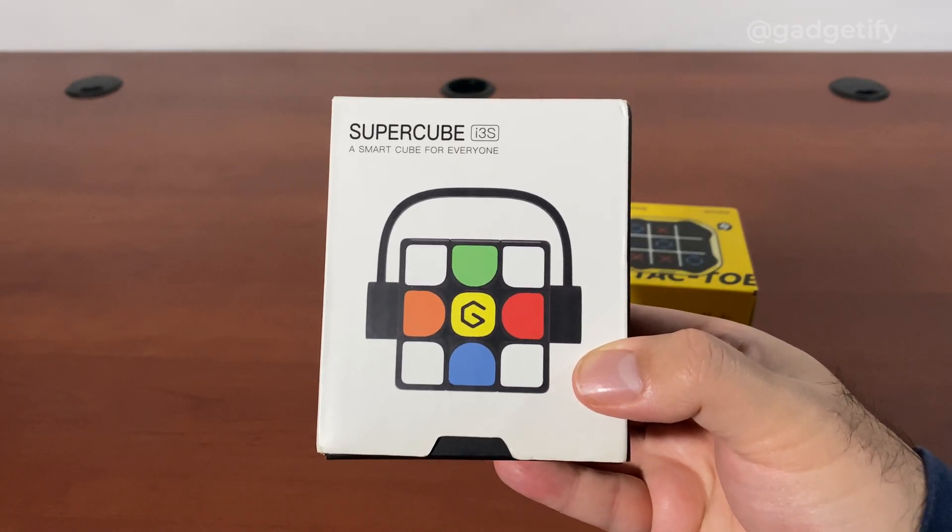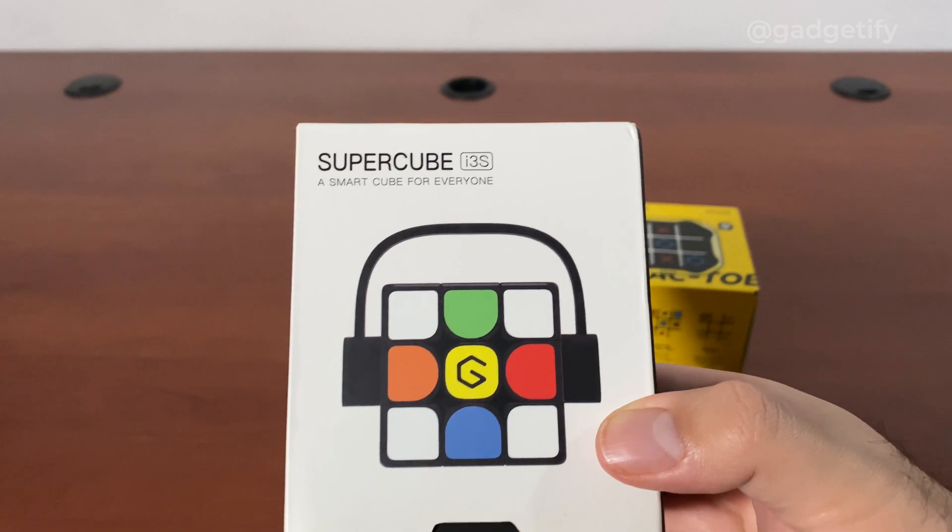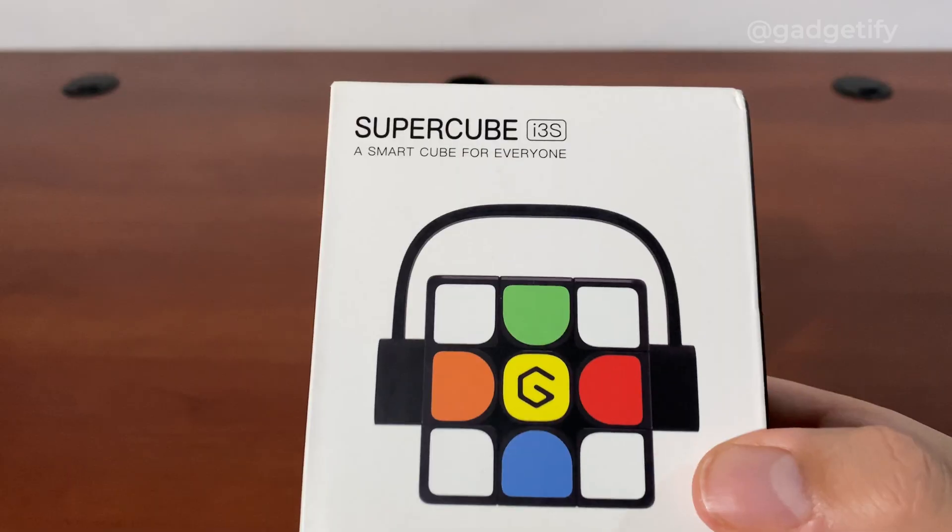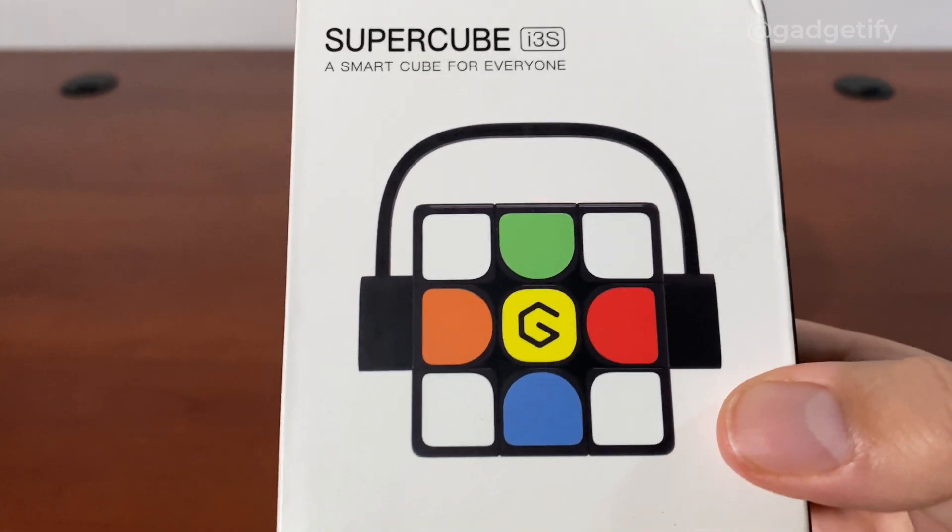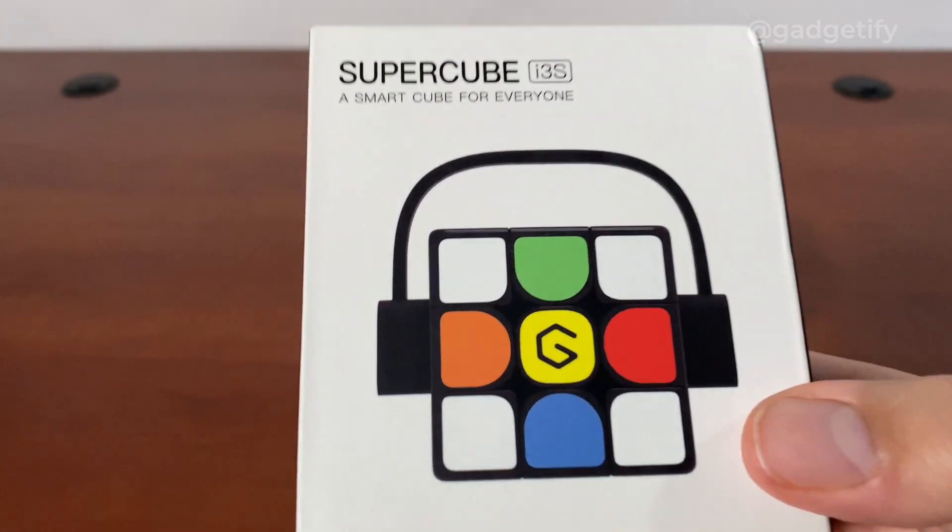This is the Supercube i3s. It's a smart Rubik's cube that combines with your phone and tracks the position. It shows you how to solve it. Also there's a bunch of games. You can get a better handle on how the cube works. You can use it to master the movement and get some practice. Let's see what's inside.